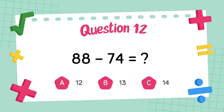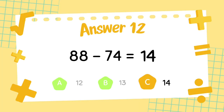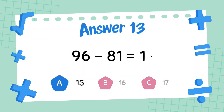What is 88 minus 74? The answer is 14. What is 96 minus 81? The answer is 15.